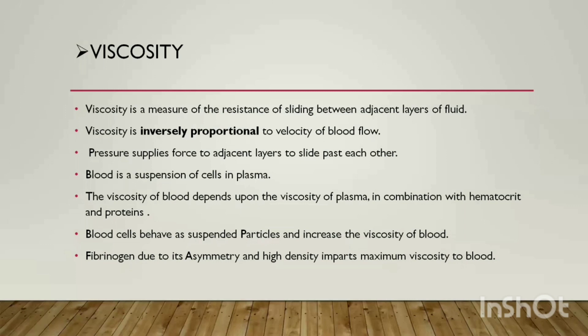Pressure supplies force to ejection layers to slide past each other. Blood is defined as a suspension of cells. The viscosity of blood depends on the viscosity of plasma within it, the glycoproteins present, and the number of hematocytes — the more suspended particles, the greater the viscosity. Fibrinogen, which is asymmetrical and dense, contributes maximally to viscosity. The more fibrinogen in blood, the greater its viscosity, and the thicker and more viscous the blood, the lower its velocity.